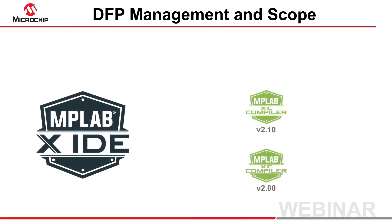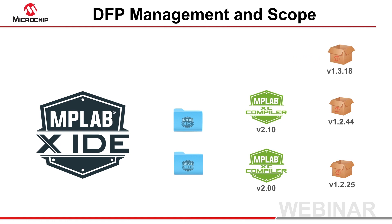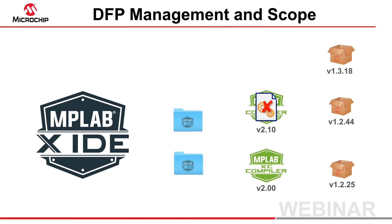Device support for both the IDE and installed compilers is now easily managed from within the IDE. Your projects are not tied to using one version of the compiler or DFP. The compiler and DFP version for each project can be independently selected, and the IDE will also let you see new DFPs and allow you to download them with a simple click. New DFPs may correct known issues in the resources used by the IDE or compilers. However, they will never patch or improve the IDE or compiler applications themselves. This still takes place through the release of new versions of those products.